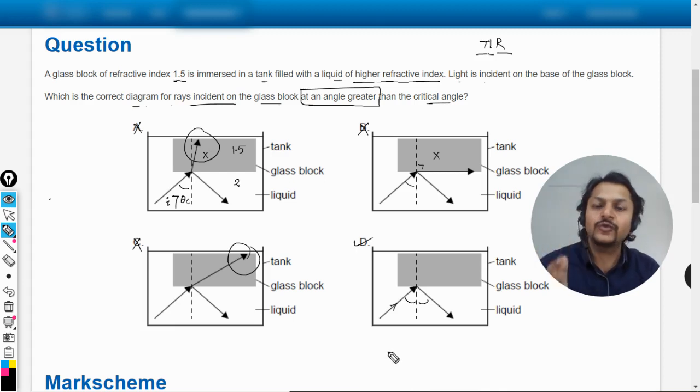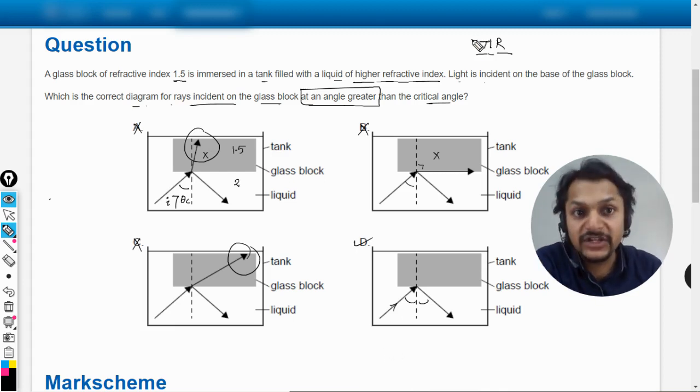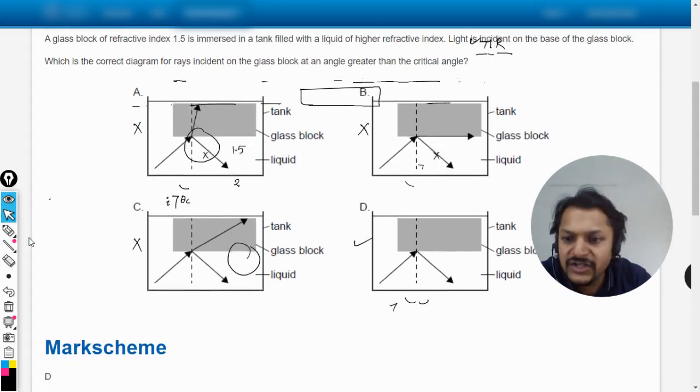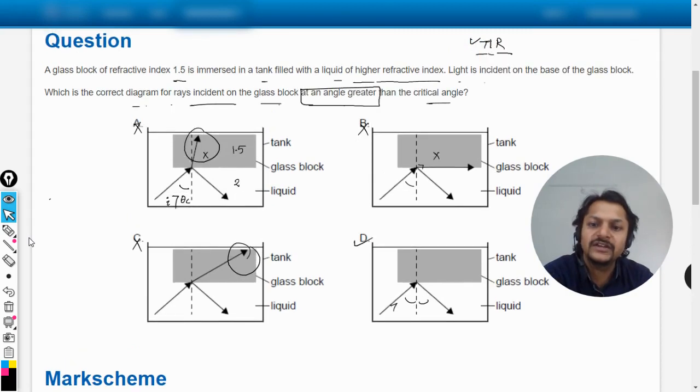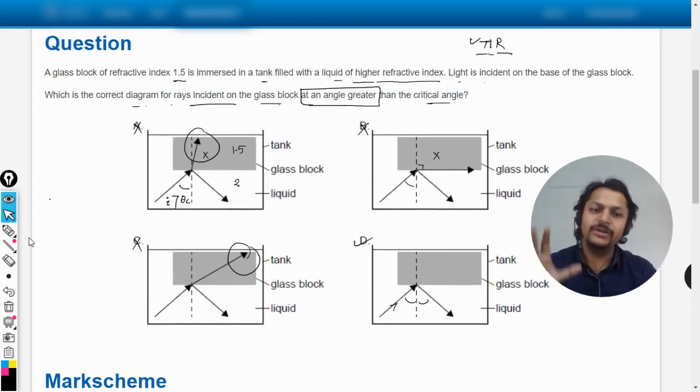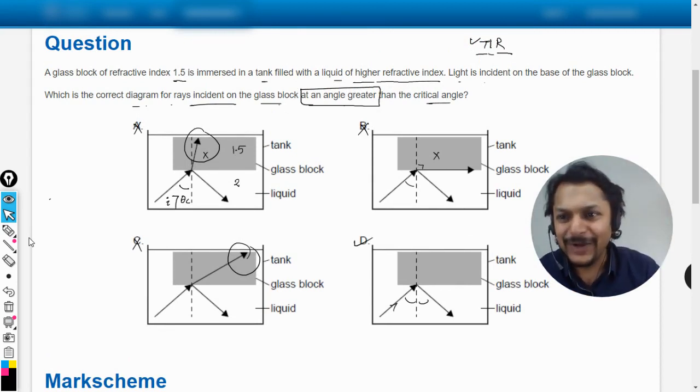Hence the answer will be D. Always remember this thing - total internal reflection, totally it is getting reflected back. Let us see the mark scheme, and yes the answer is D. My dear students, this is professor. Please subscribe to the YouTube channel. All the best, bye.